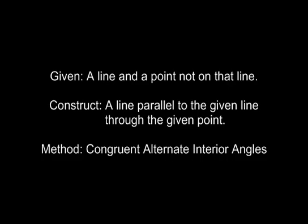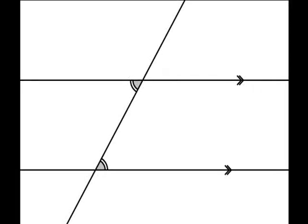In other words, we'll be given a line and a point not on that line, and we will need to construct a line parallel to the given line through the given point. Let's quickly refamiliarize ourselves with alternate interior angles that are congruent.